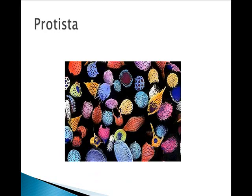The Protista are eukaryotic, unicellular or multicellular, and they have lots of different lifestyles. Some examples include diatoms, Euglena, amoeba, slime molds, and Paramecium.